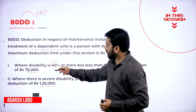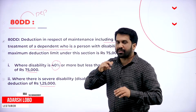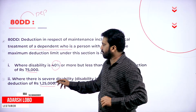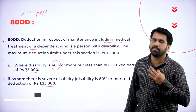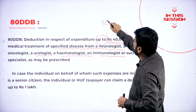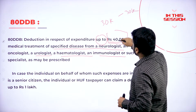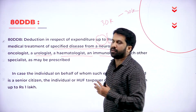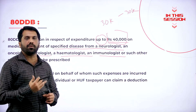Up to 40% of the disability, we call it as normal. If it exceeds 40%, we call it as severe disability. Remember — up to wherever they have mentioned, you have to go for up to. If you spend 30,000, you should go for 30,000 only, not 40.